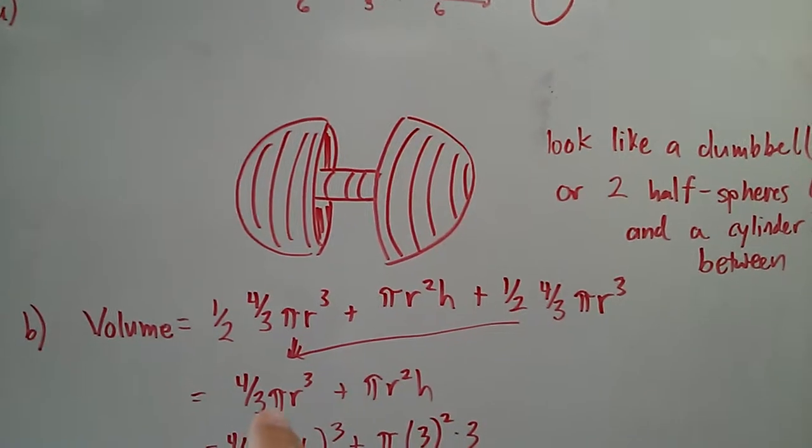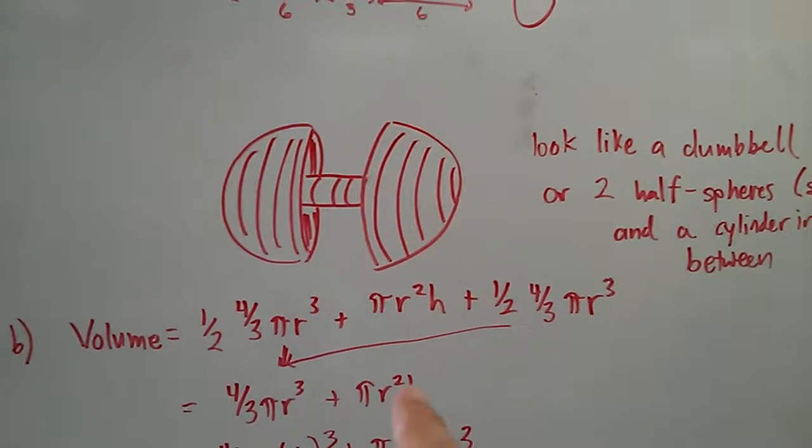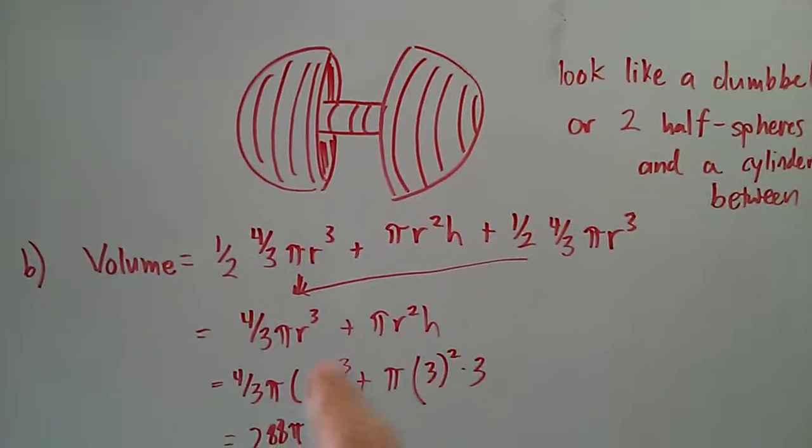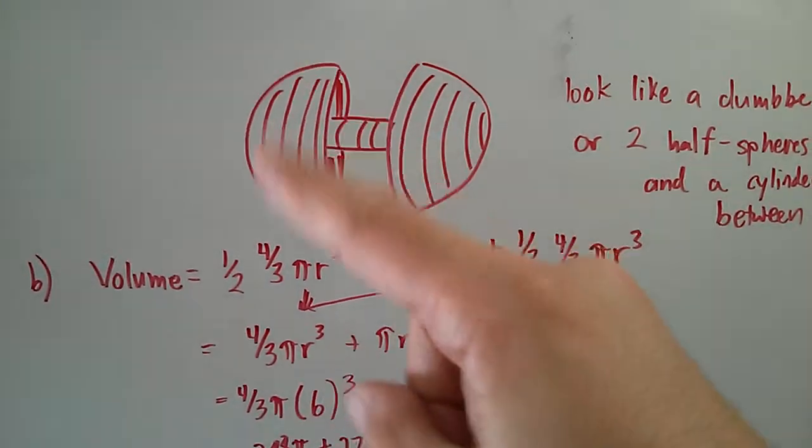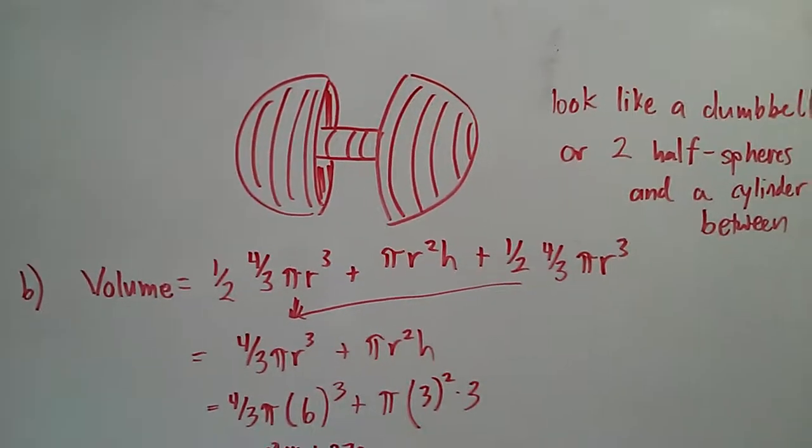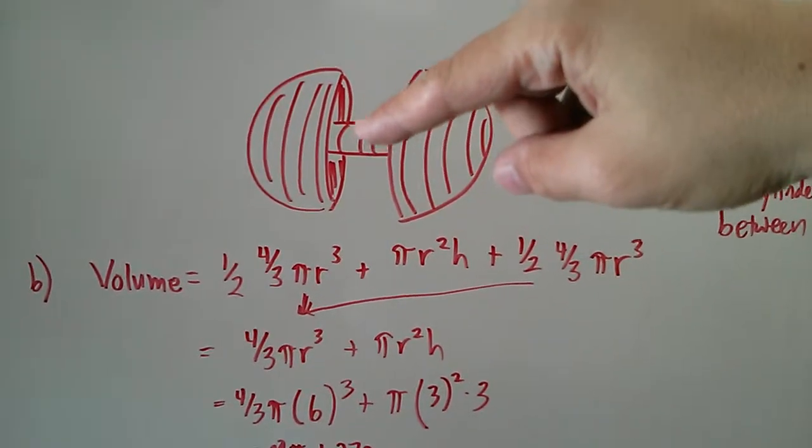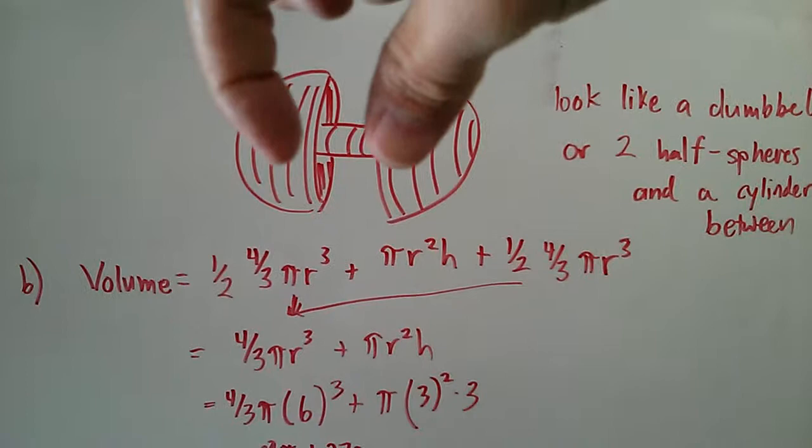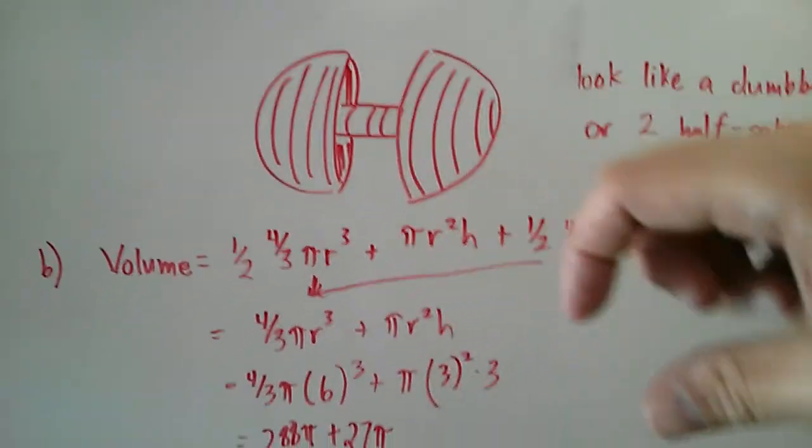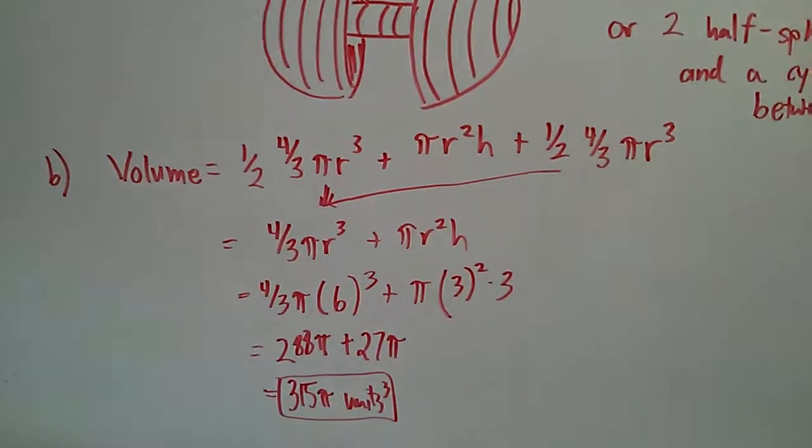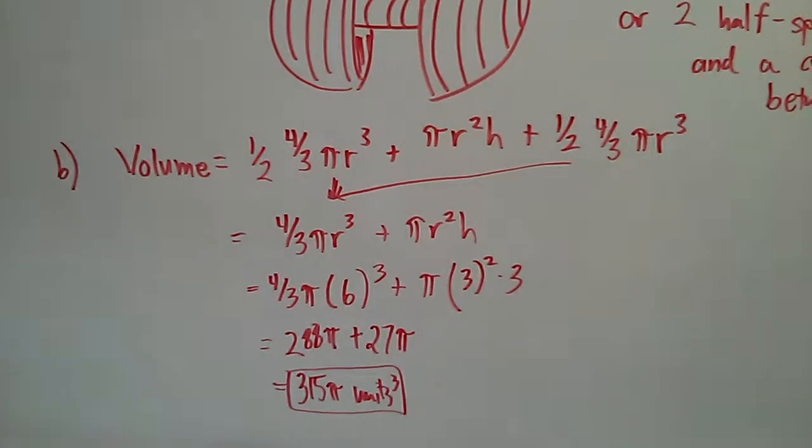Plugging in the radius for the sphere, which is 6, so 6³. The radius for the cylinder is 3, and the height, the distance between these two sections, is 3. Plugging it in, you get 315π units³.